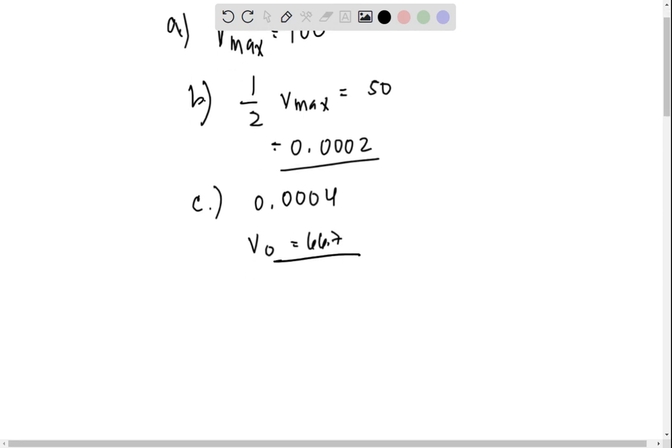For part D, for having 0.0004, what will be the V0 in the presence of inhibitor, in which our Km with the inhibitor equals 0.0005? And definitely our V0 is 44.4.